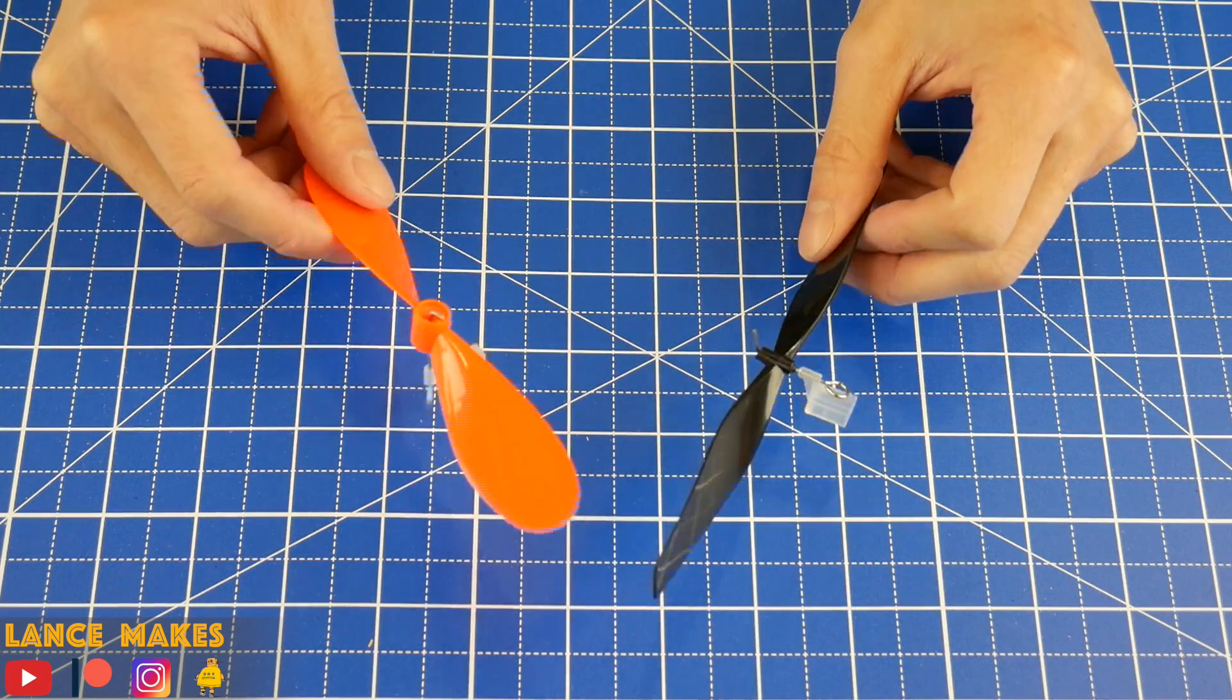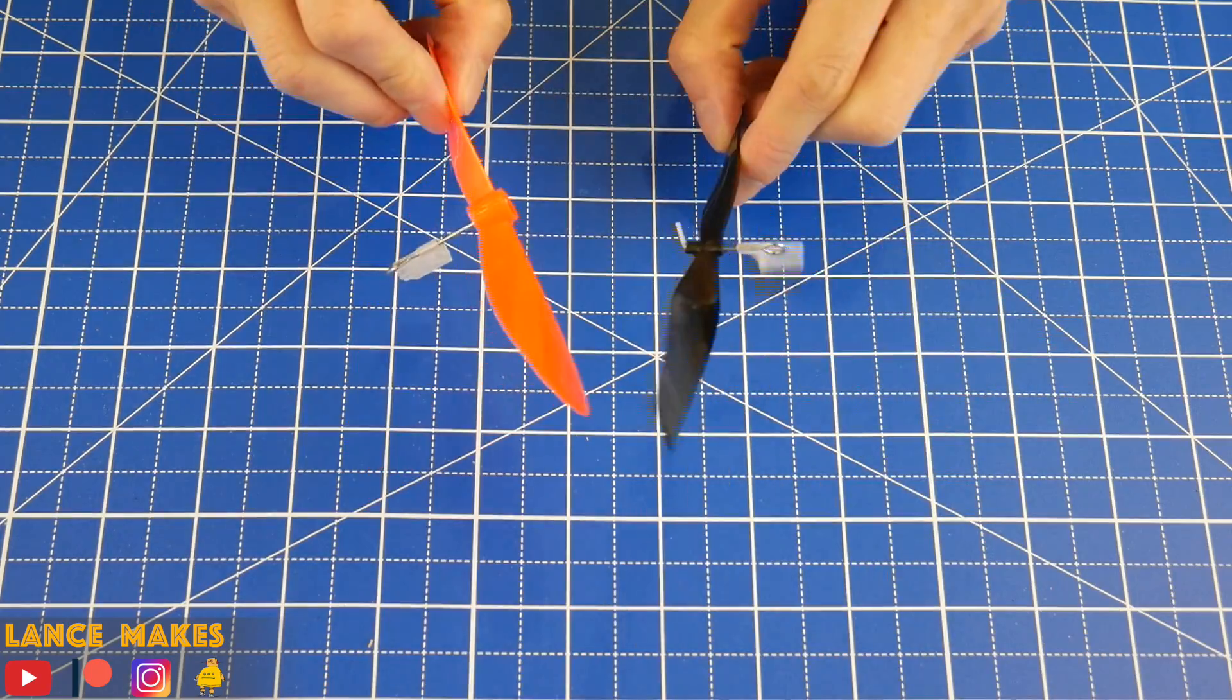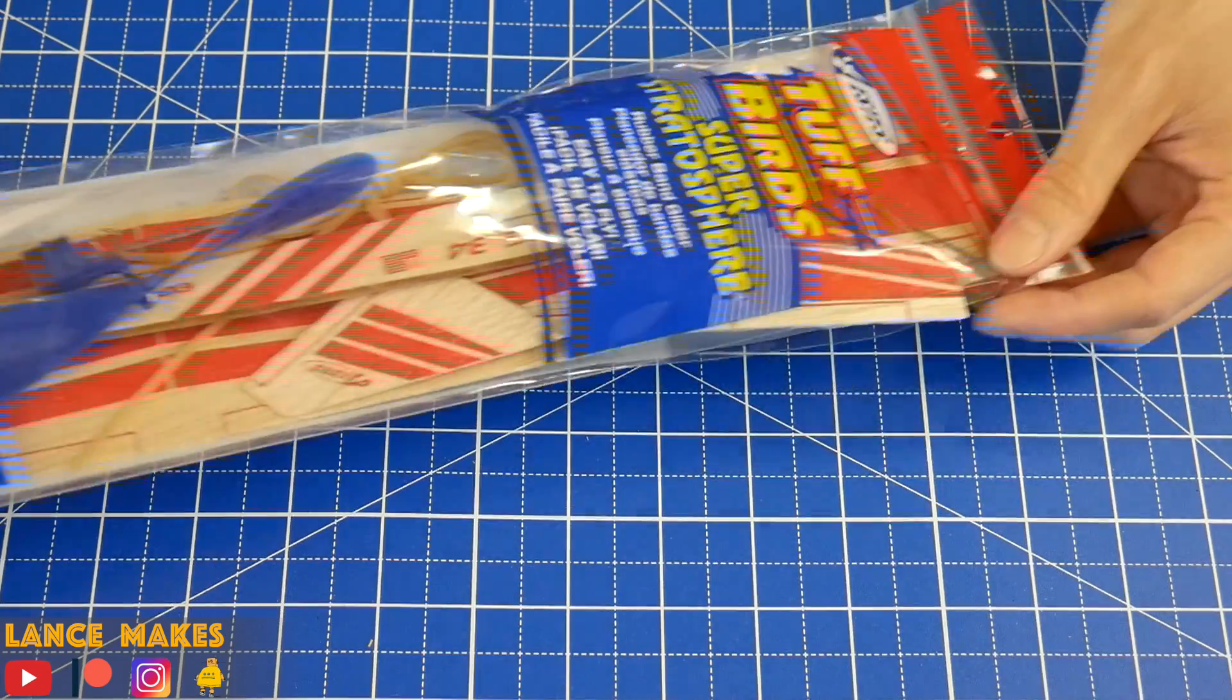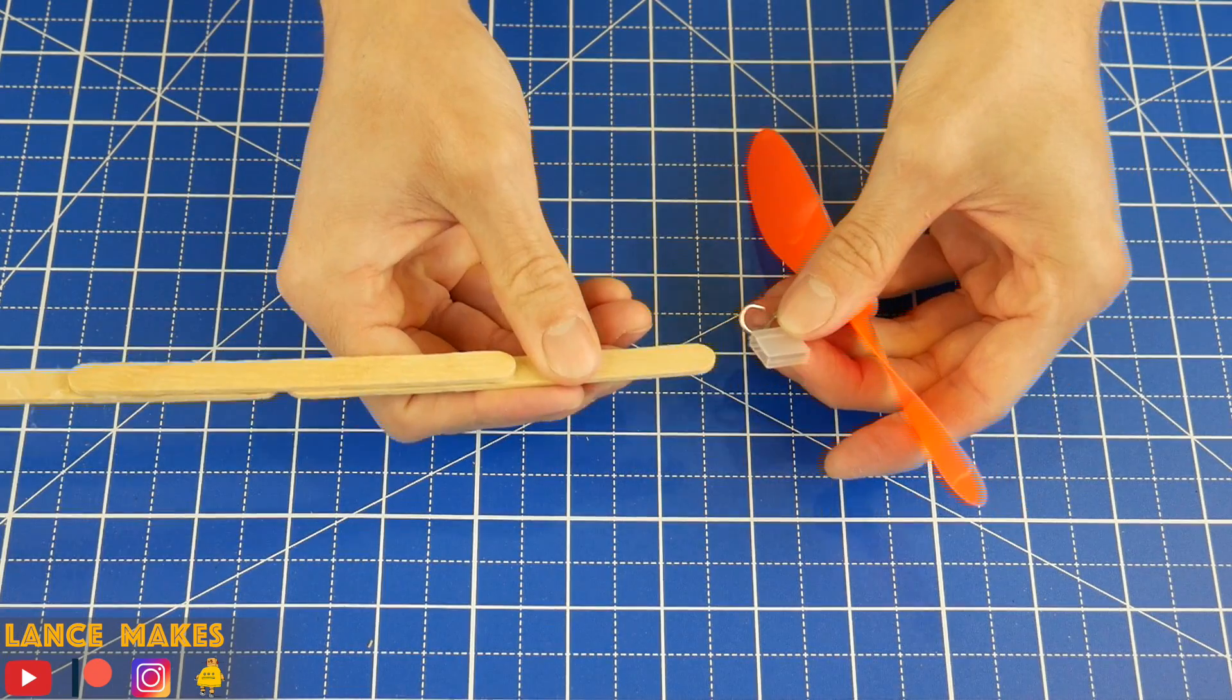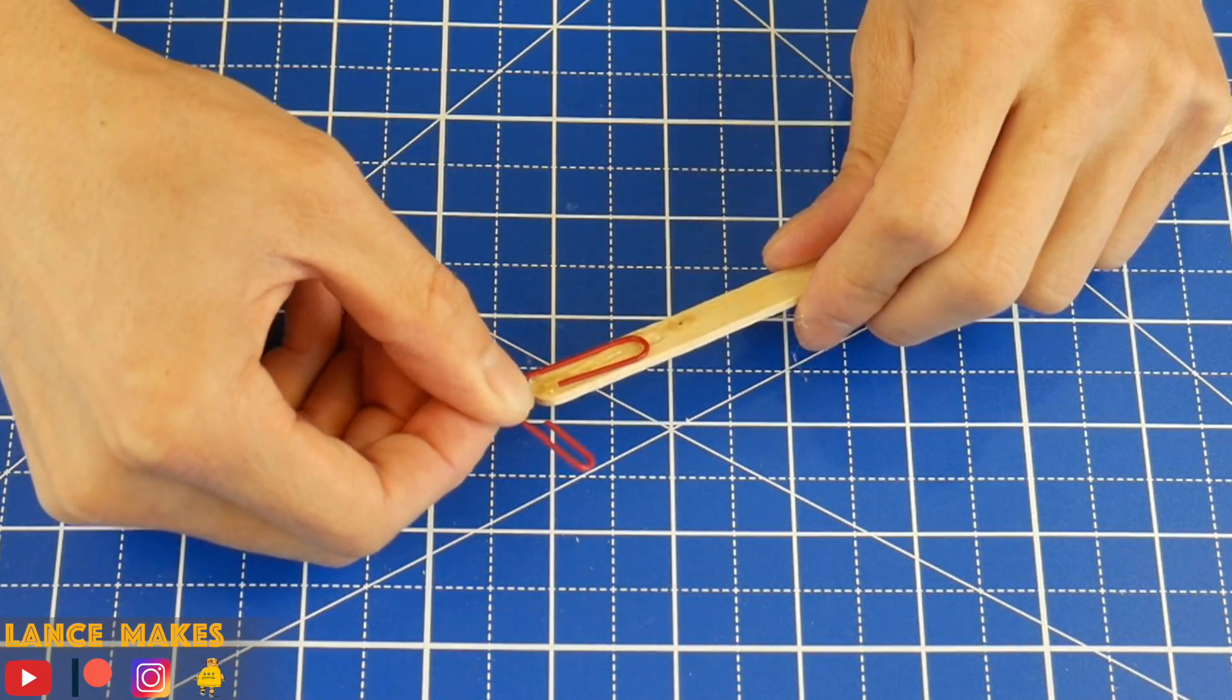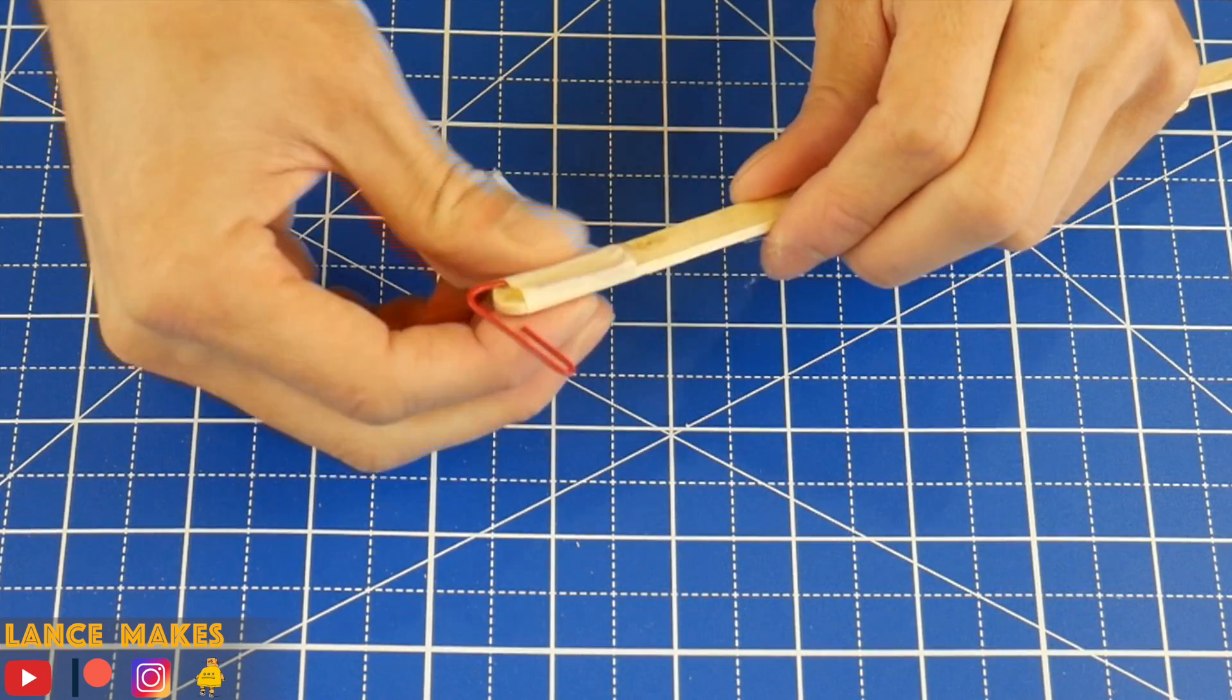Then gather a plastic propeller. If you live in the US, you can find these propellers on Amazon. Otherwise you can find one of these propellers in these balsa wood plane kits. Fit the propeller on, and then bend, glue, and tape on a paper clip.